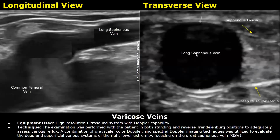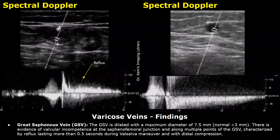The great saphenous vein — the great saphenous vein is another name for the long saphenous vein. These are the findings of the great saphenous vein: the GSV is dilated with a maximum diameter of 7.5 millimeters. The normal measurement is below 3 millimeters. There is evidence of valvular incompetence.